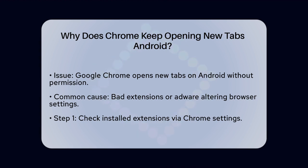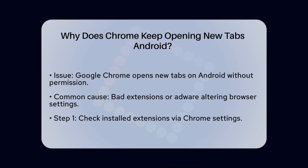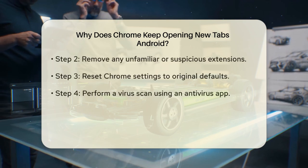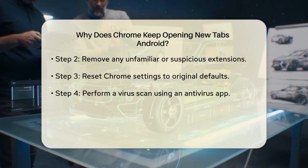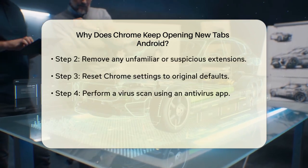These unwanted programs can change your browser settings, causing Chrome to open new tabs automatically. Here's how you can identify and fix this. Check your extensions — go to Chrome, tap the three vertical dots in the top right corner and select Settings. Then go to Extensions, or type chrome://extensions/ in the address bar. Review the list of installed extensions and remove any that you don't recognize or suspect of causing the problem.